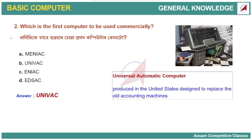First computer to be used commercially — what is the first computer to be used commercially? The answer is UNIVAC. The full form is Universal Automatic Computer. The old accounting machines could be replaced by this computer. The name is UNIVAC.